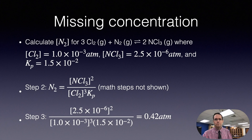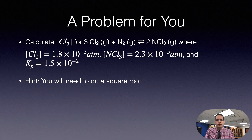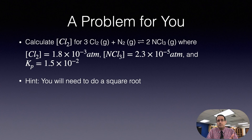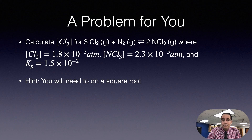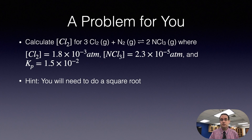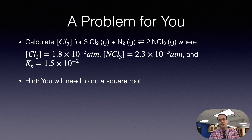Here's a practice problem using the same chemical reaction: you're given chlorine, NCl3, and K_p, and you want to find the pressure of chlorine. Hint: you will need to take a square root, so find that square root on your calculator. Thanks for watching — I hope this helps you understand the textbook and do additional practice problems to improve your mastery. Please give this video a thumbs up and have a great day!